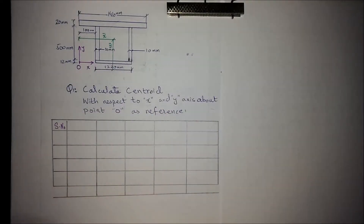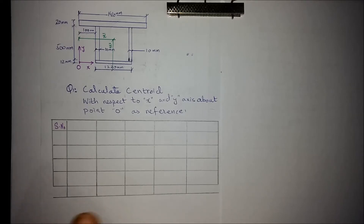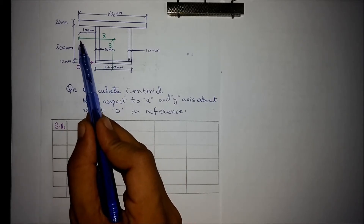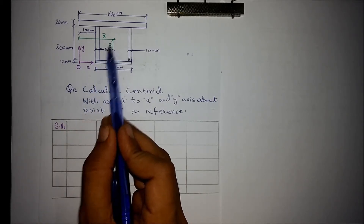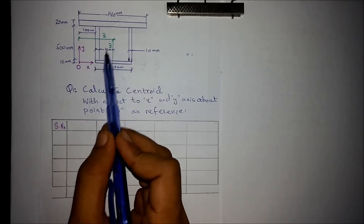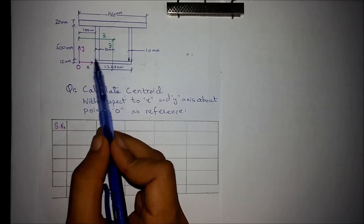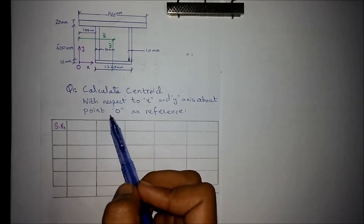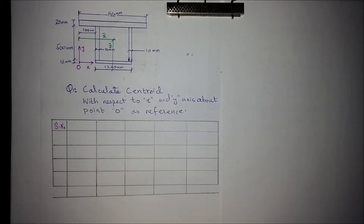In the following video we are given a composite cross-sectional shape. The dimensions are given in the figure. We need to find out the centroid with respect to the x and y axes. The centroid for the x axis and y axis — we have to find out the location of this point with respect to both axes. We discussed the definition and formula of centroid in previous videos; now we will apply those concepts to this question.